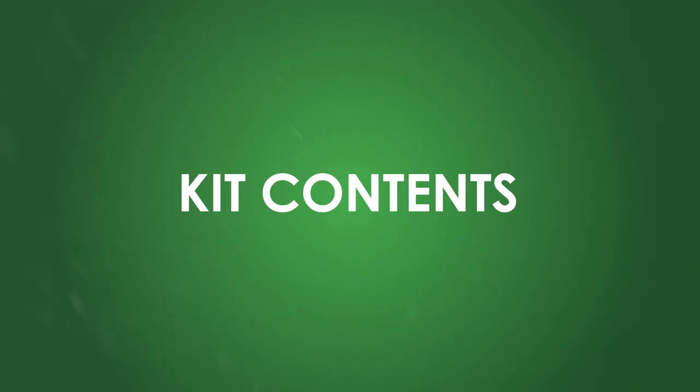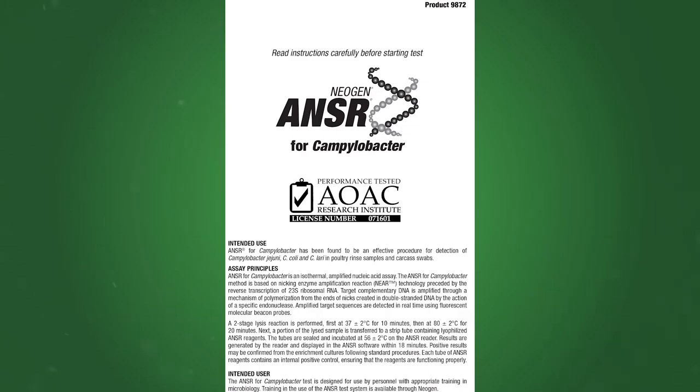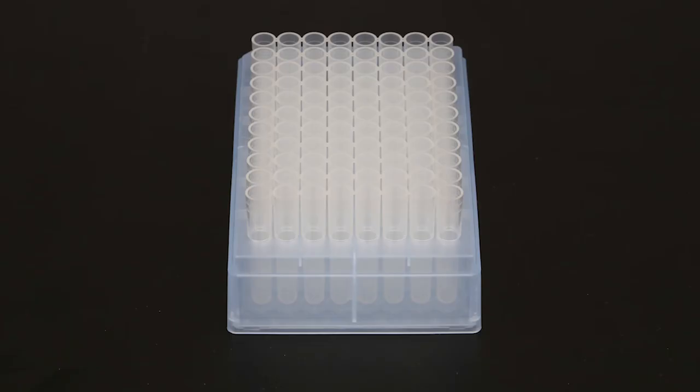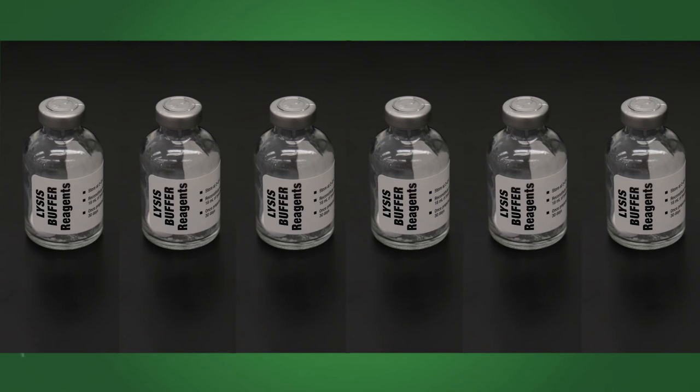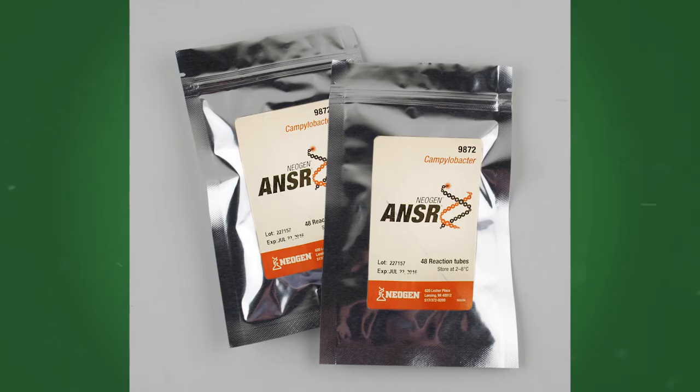What comes in the ANSR Campylobacter kit? One kit insert plus additional information on Amplicon, one rack of 12 strips of 8 cluster tubes 1.2 milliliter, six vials containing lyophilized lysis reagent, 12 strips of 8 permanent caps for the reaction tubes, two sealed foil pouches each containing 6 reaction tubes with lyophilized ANSR Campylobacter reagents with a desiccant pouch.